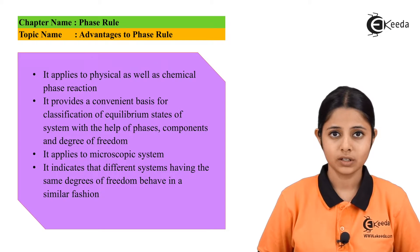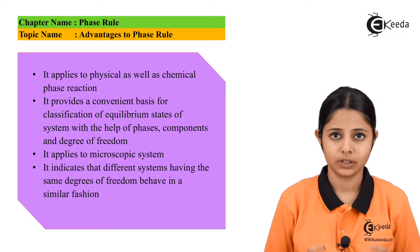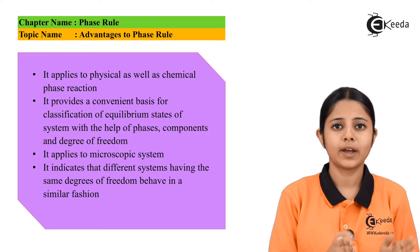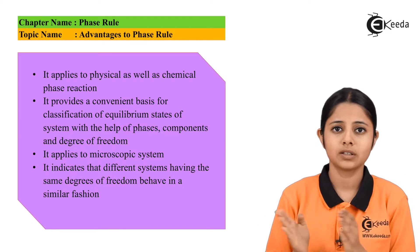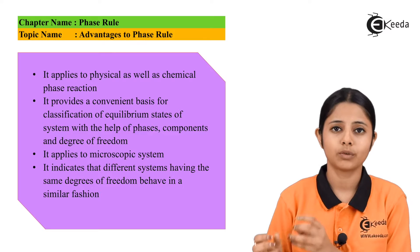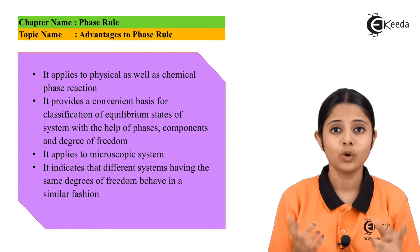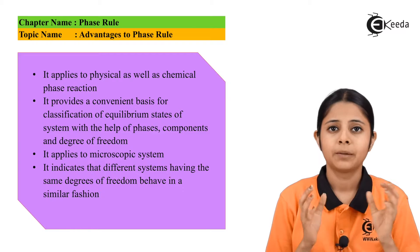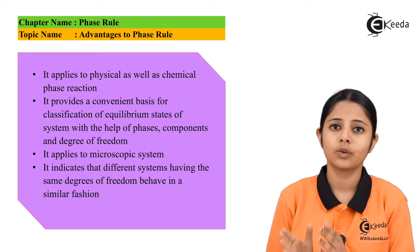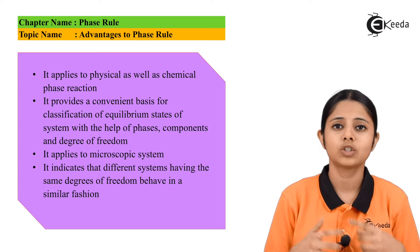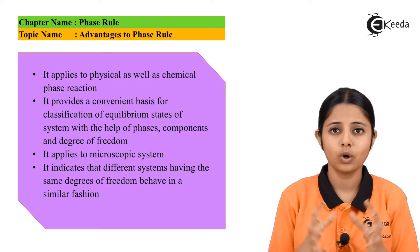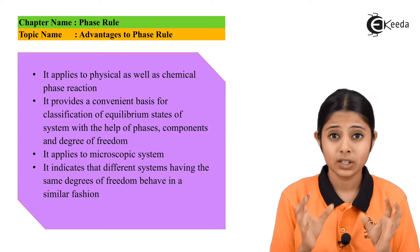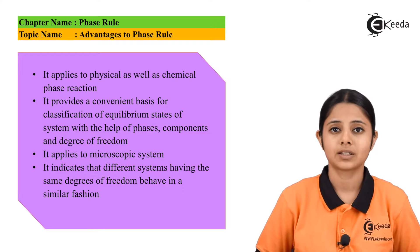The fourth advantage is we can just find out the degrees of freedom of various systems. So if I have three systems and all these three have almost similar degrees of freedom, then the behavior of these three systems will be similar. Now what do we mean by behavior? Behavior can be the chemical changes or the physical changes. The chemical reaction and the physical properties of all of them will be similar because the degrees of freedom present in them are same or similar.